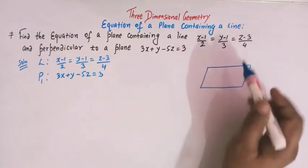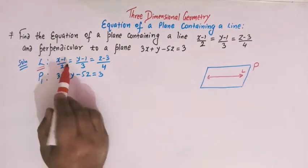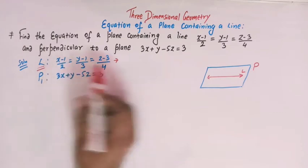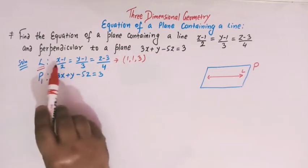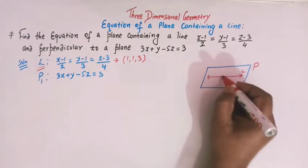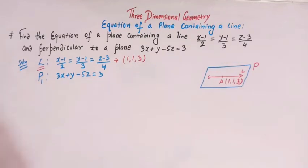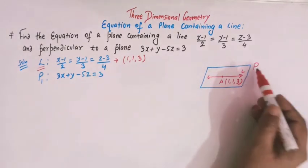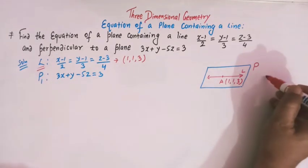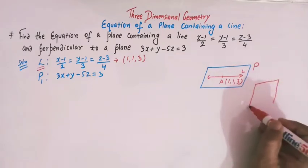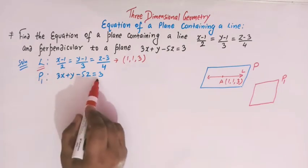Let us draw a rough diagram. We are given a plane P, which contains this line, and this plane P is perpendicular to plane P1. The line passes through the point (1, 1, 3), which we can denote by point A. Plane P1 has the equation 3x plus y minus 5z equal to 3.